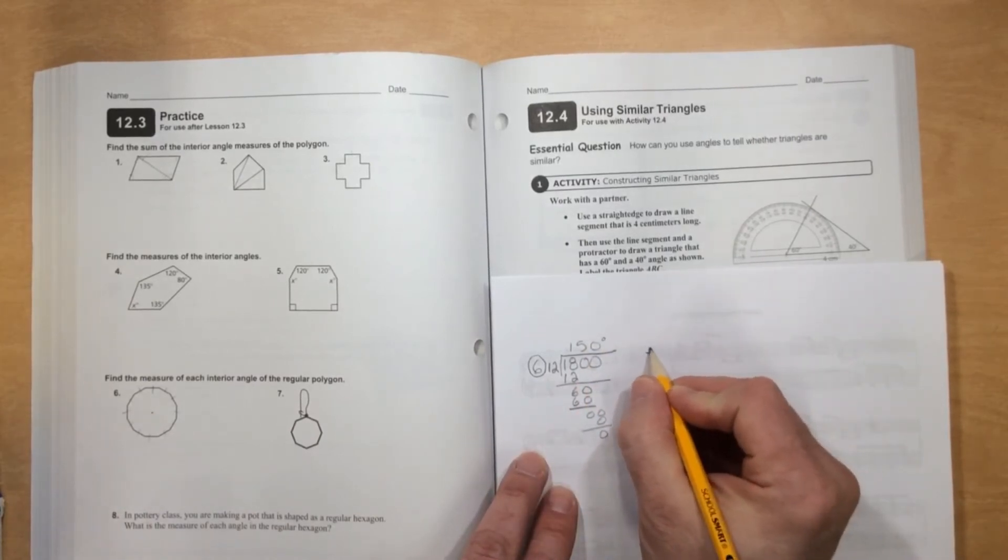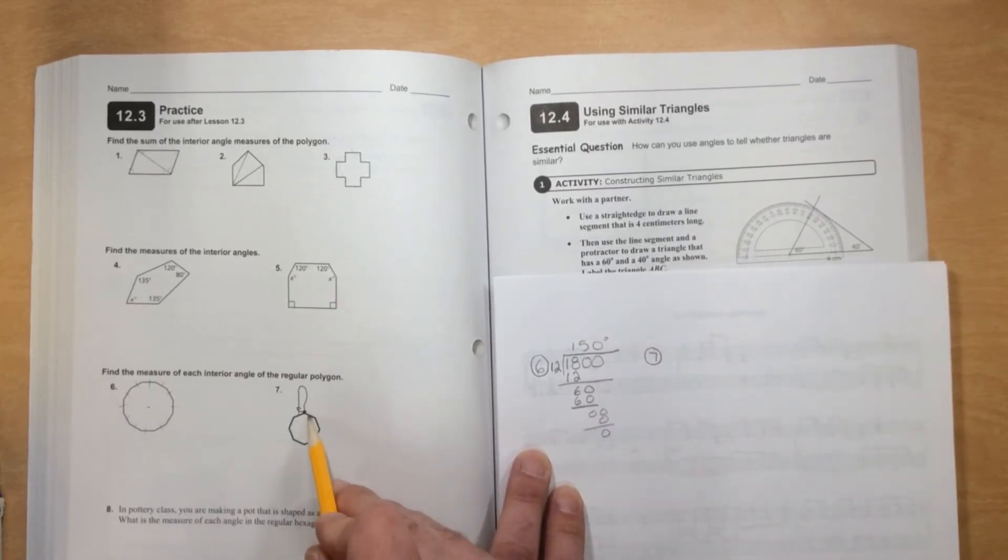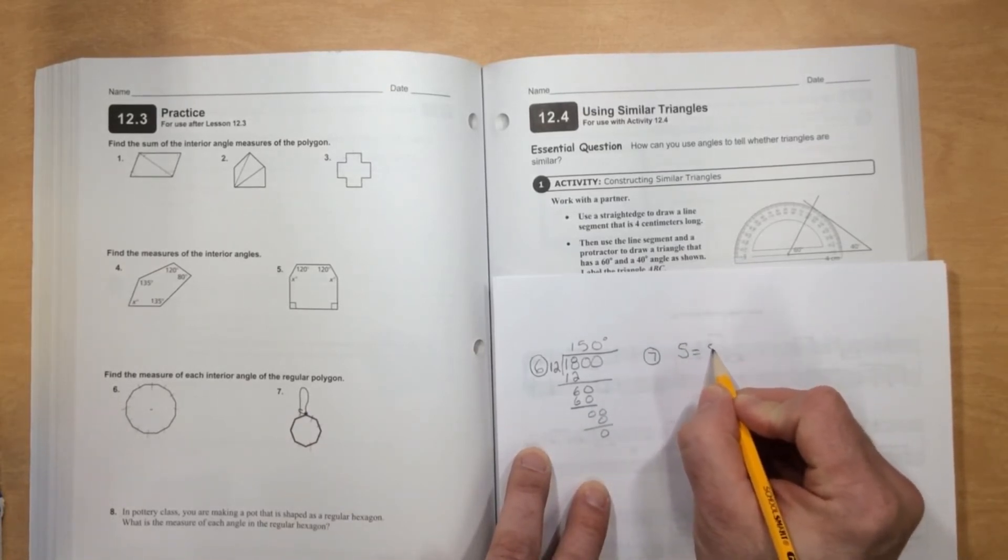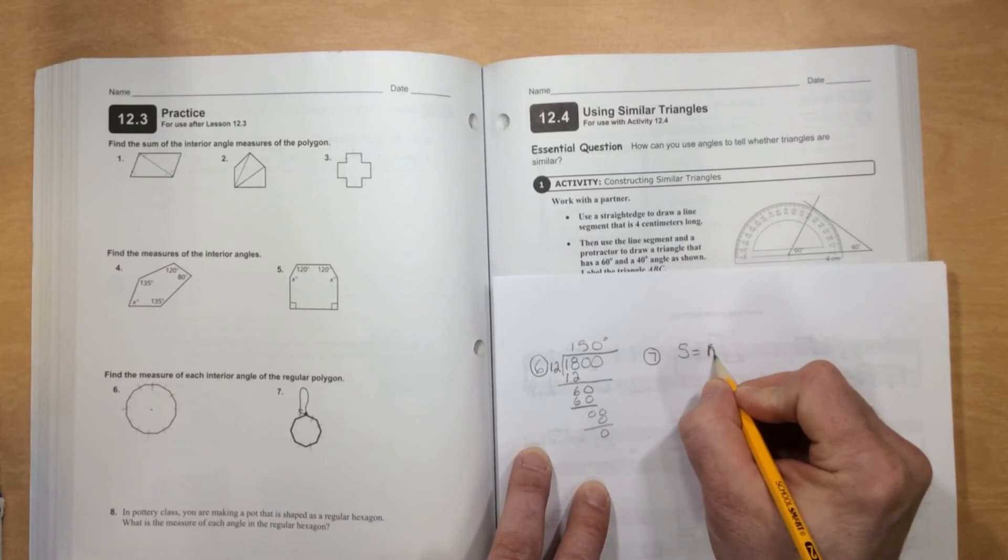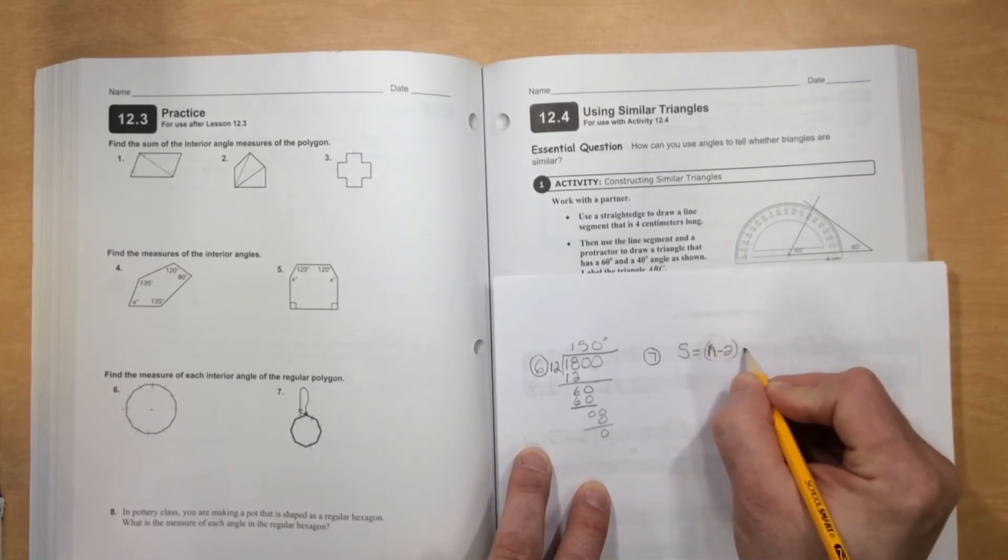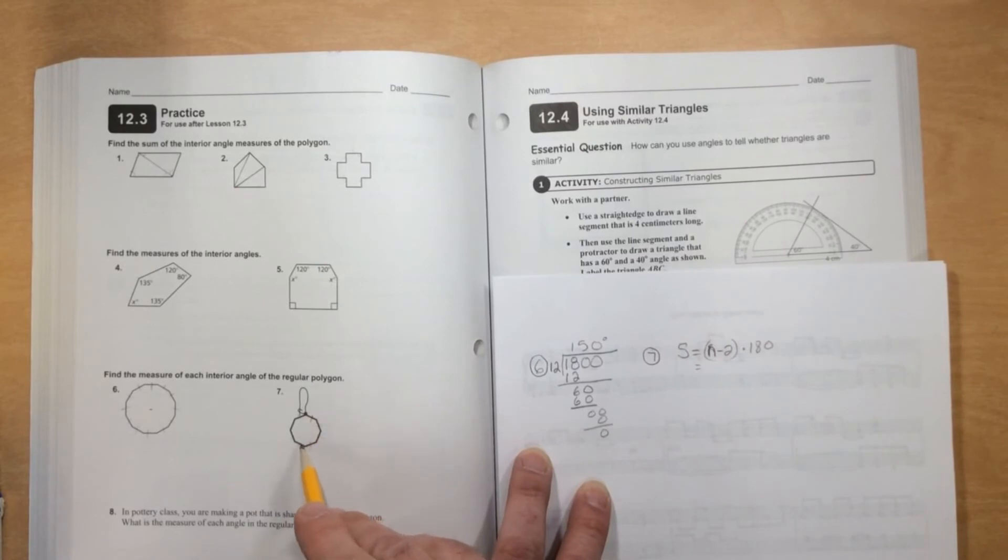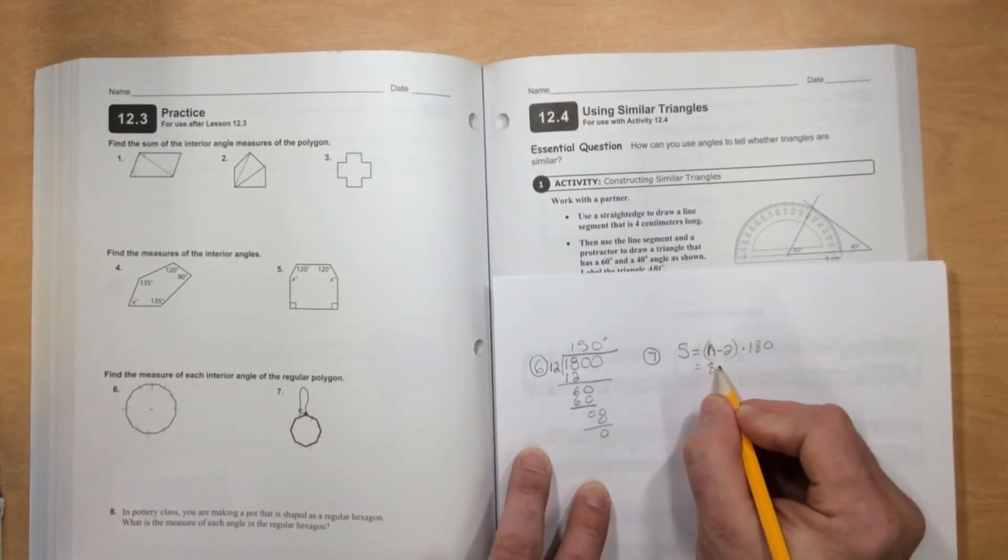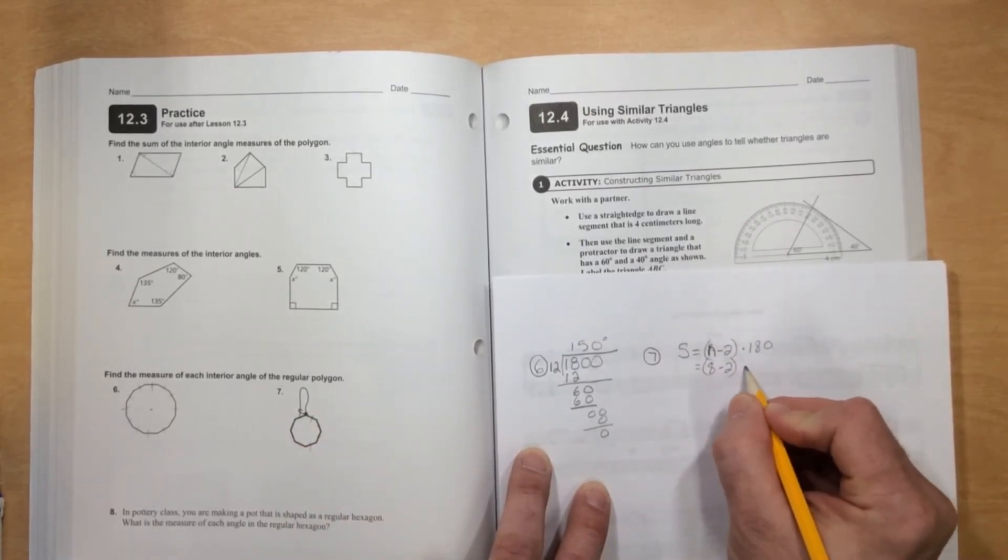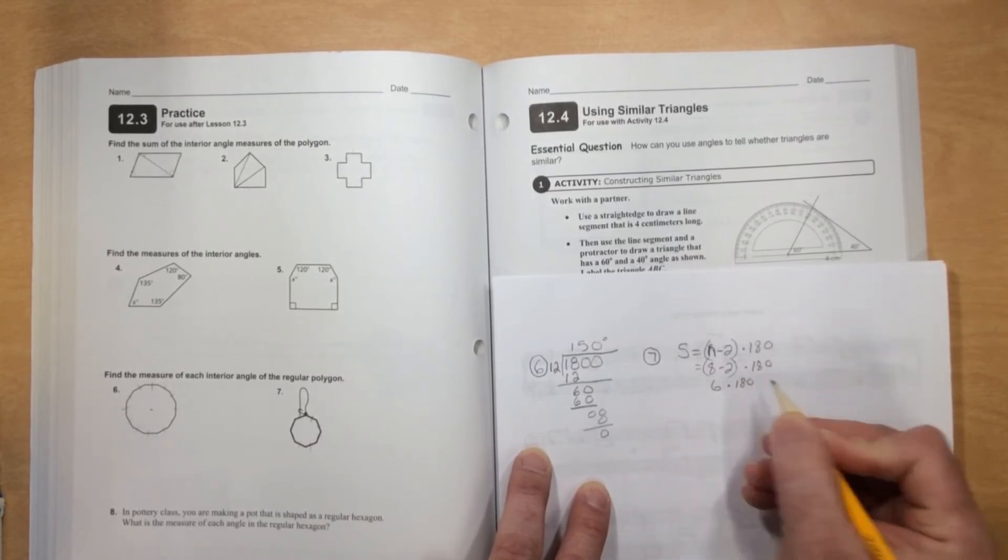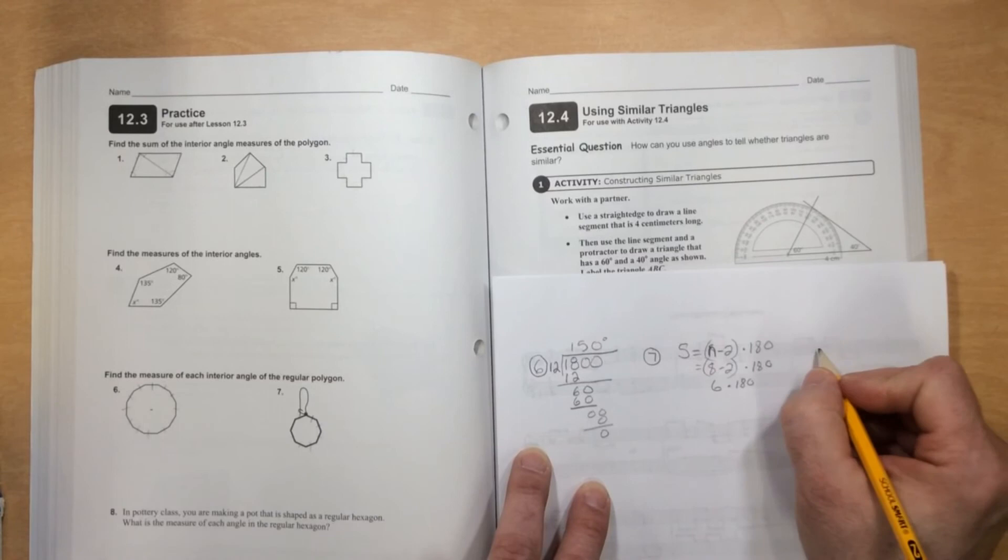Number 7. We'll start here: 1, 2, 3, 4, 5, 6, 7, 8. So the sum will be, I'll write the formula down first, N minus 2 times 180, which will be 8 minus 2 times 180, which is 6 times 180.